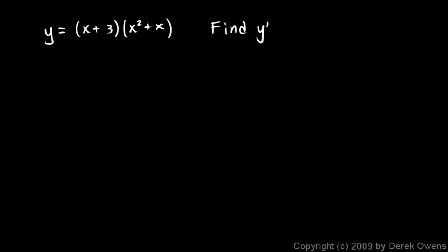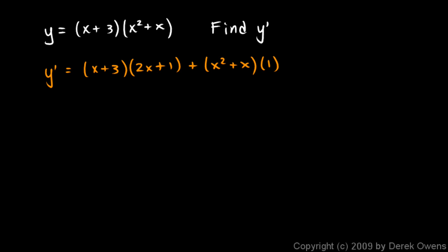So y prime is going to be the first, which is x plus 3, times the derivative of the second, which is 2x plus 1, plus the second, that's x squared plus x, times the derivative of the first, which is just 1.